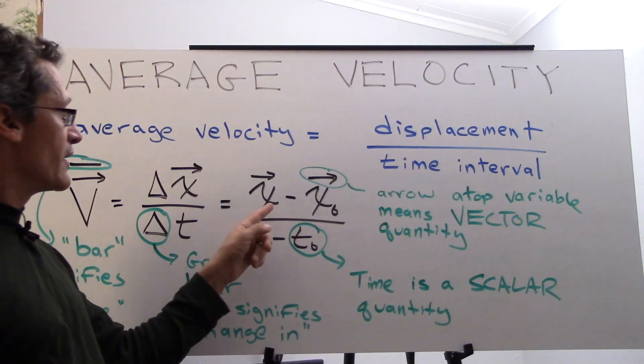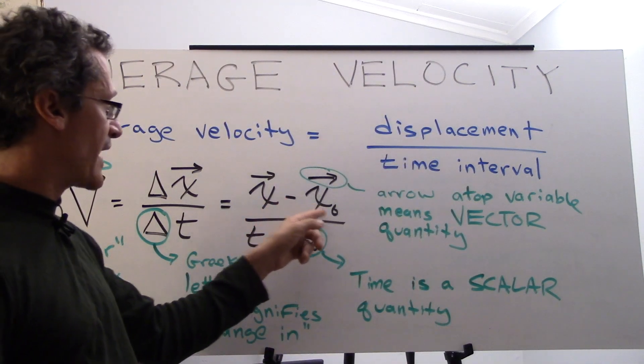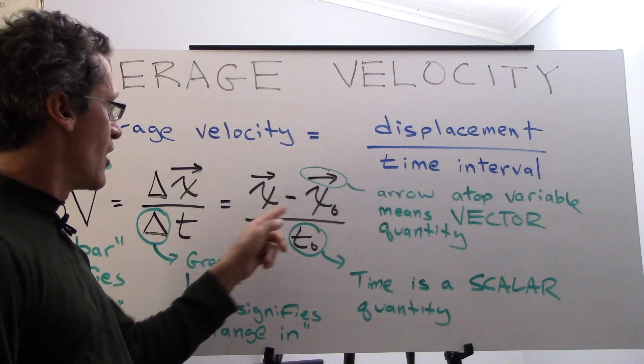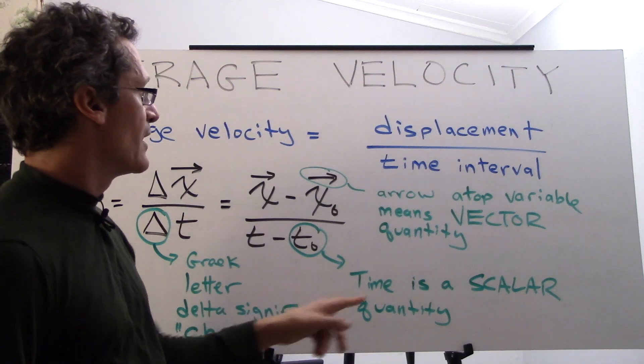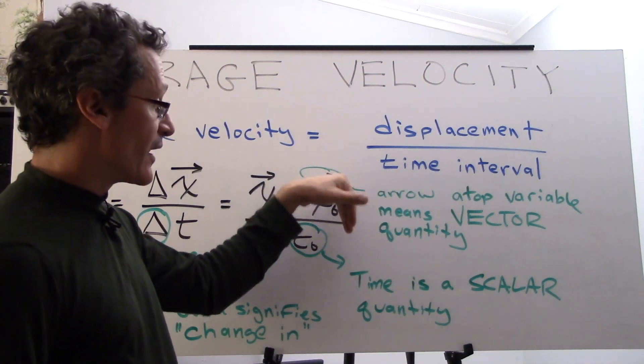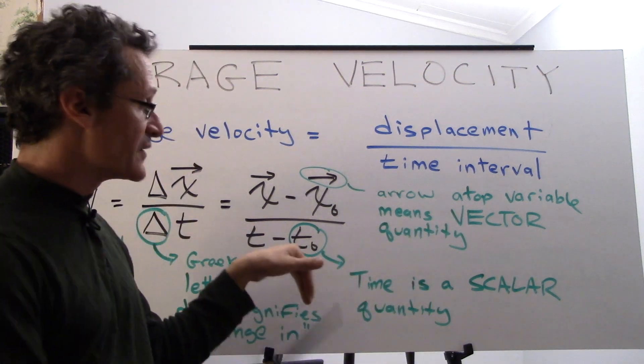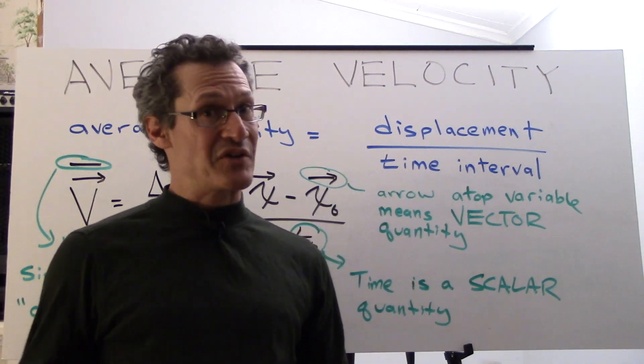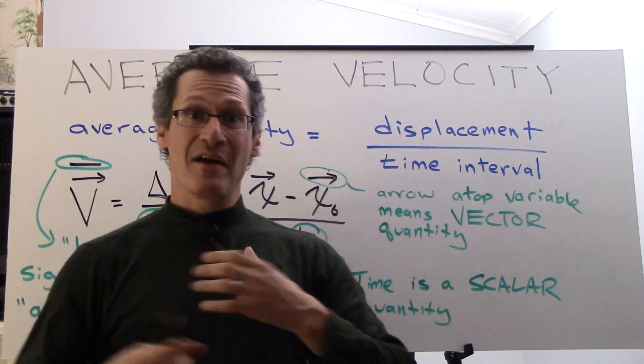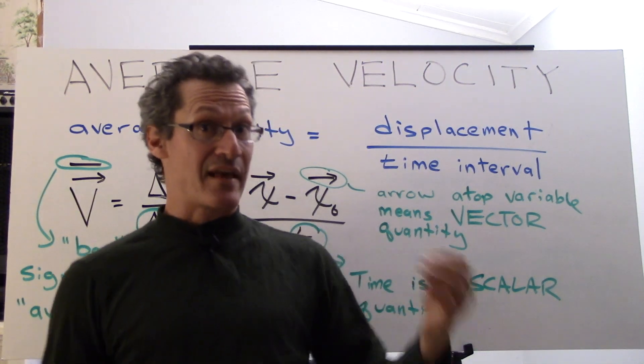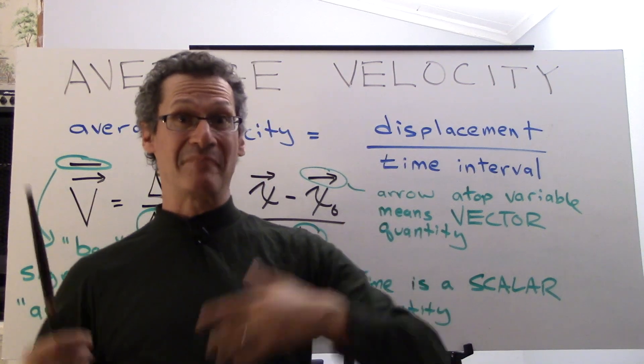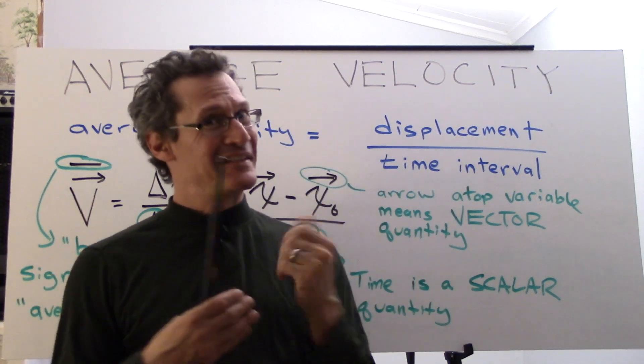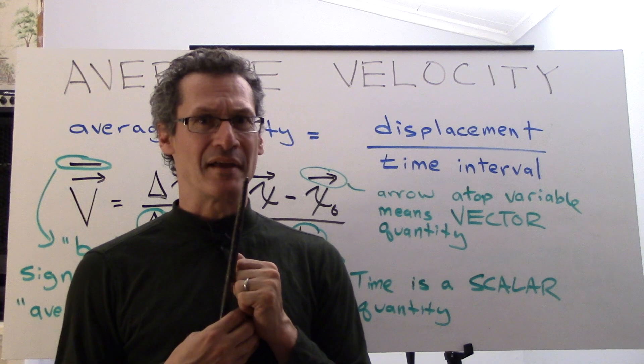Okay so if we look at it over here it's going to be x minus x naught, both vector quantities, over t minus t naught. So the arrow again signifies that it's a vector quantity. Time however is a scalar quantity. Time only goes in one direction so we can pretty much consider it always to be positive. We don't have time machines yet that can go backwards so until that point time is considered to be a scalar.